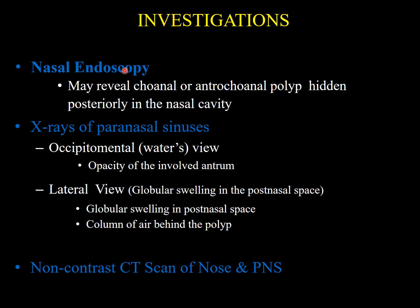Investigations: nasal endoscopy is foremost — it may show a mass in the posterior nasal cavity, in the choana, or in the nasopharynx. X-rays of paranasal sinuses — the occipitomenial view may show opacity of the involved antrum, and the lateral view may show a globular swelling in the post-nasal space with an air column behind the polyp. CT scan of the nose and paranasal sinuses will confirm the diagnosis.